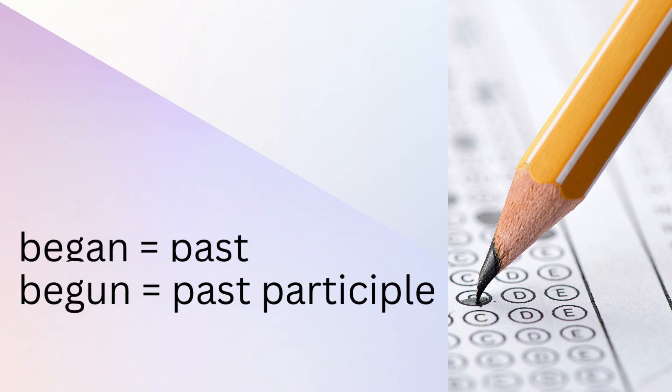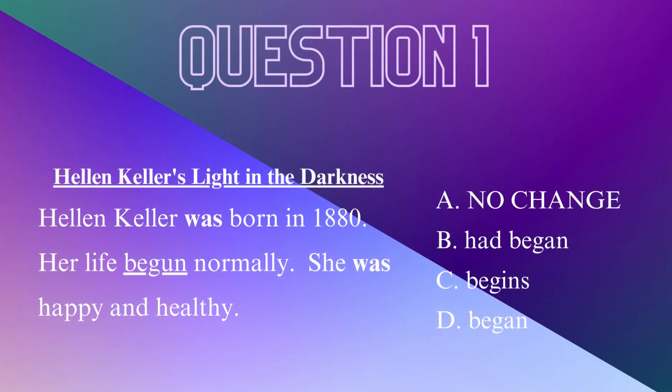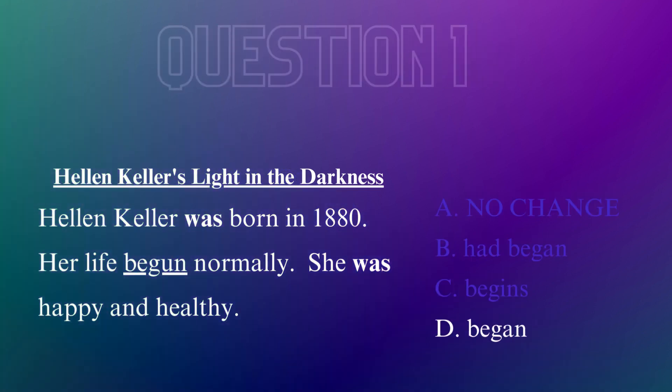Always look at the context of the sentence or passage and make sure the tense in question matches the other verbs used. Notice 'was,' past tense, is used twice here. So which word is past? 'Began' (A-N) — her life began normally. D is the answer.